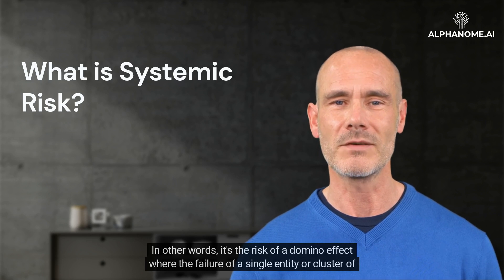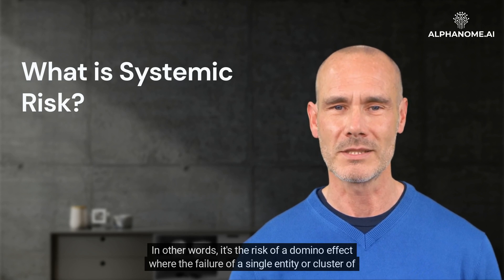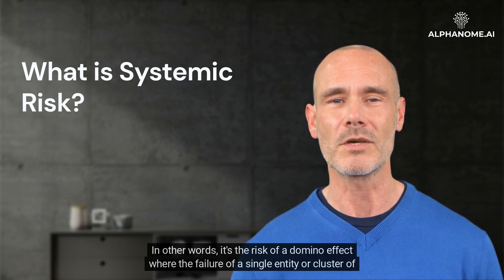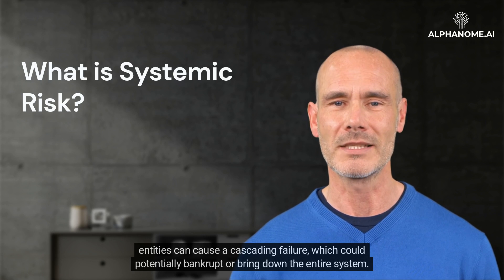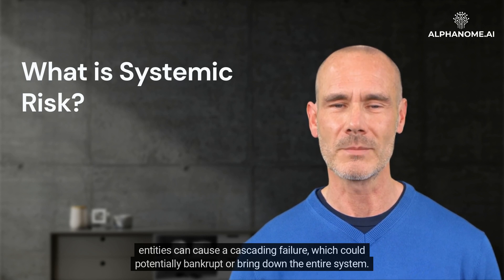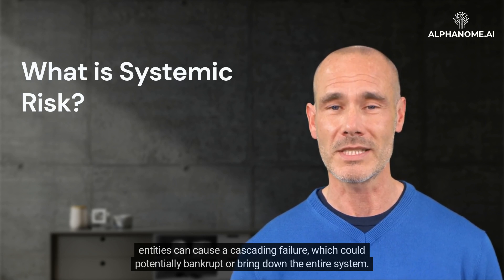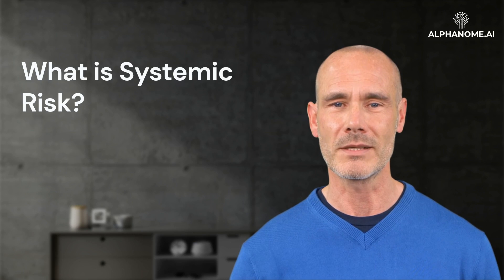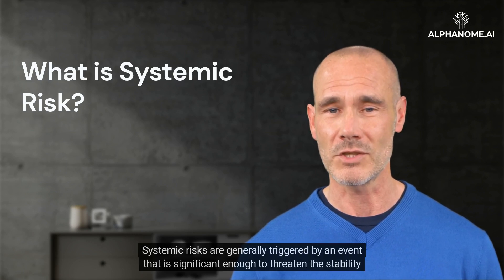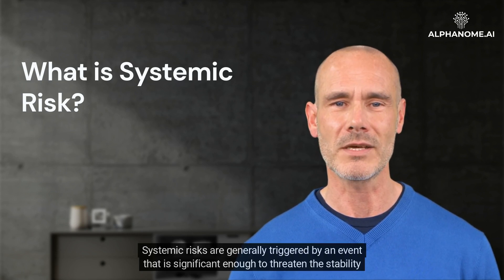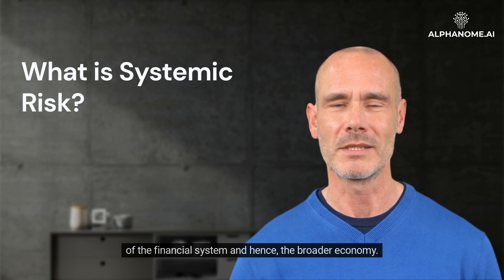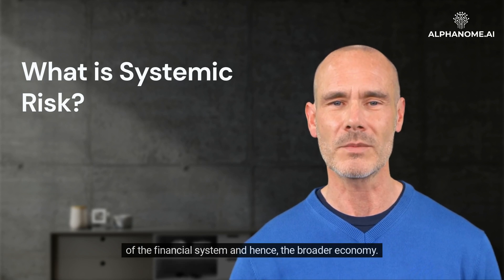In other words, it's the risk of a domino effect — the failure of a single entity or cluster of entities can cause a cascading failure, which could potentially bankrupt or bring down the entire system. Systemic risks are generally triggered by an event significant enough to threaten the stability of the financial system and, hence, the broader economy.